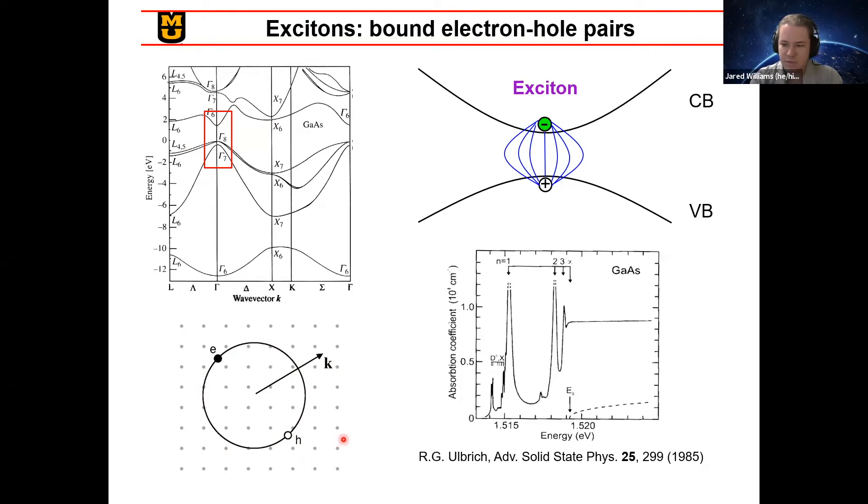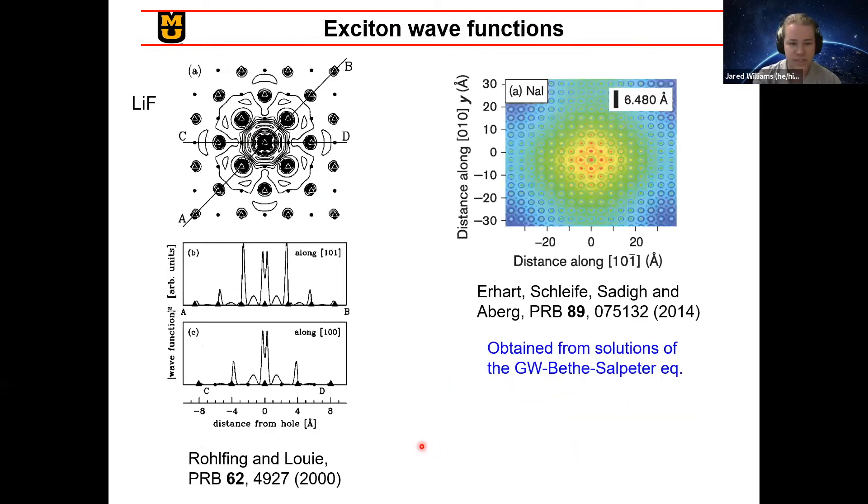But we see them experimentally, mostly in the spectra like this, where they show up as these large peaks prior to the band gap energy. And so when looking at these excitons and what their wave functions look like, how to describe them, this has been done before, of course. And here are some examples of a 2D contour plot, a heat map, or even a 1D cut through of the wave functions.